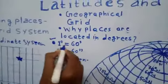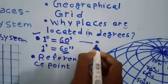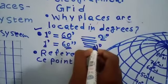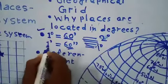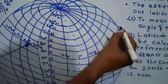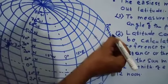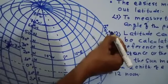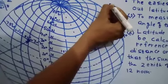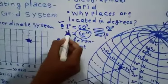One degree equals 60 minutes, and each minute can be further divided into 60 seconds. In between one degree and two degree of latitude, there are another 60 lines at intervals of one minute, and each minute can also be divided into 60 seconds. We represent seconds with a double inverted comma.